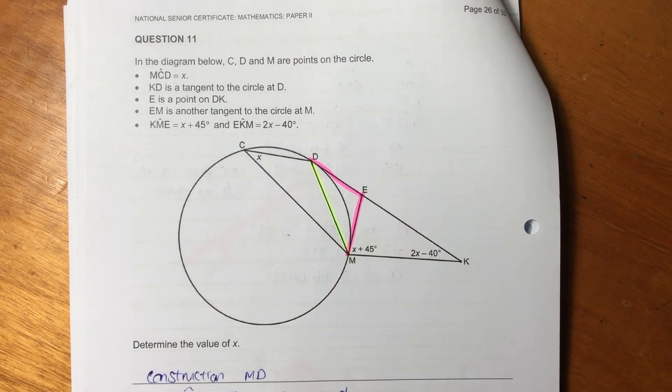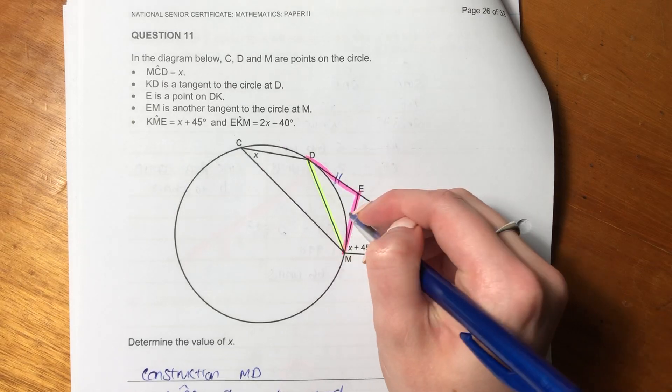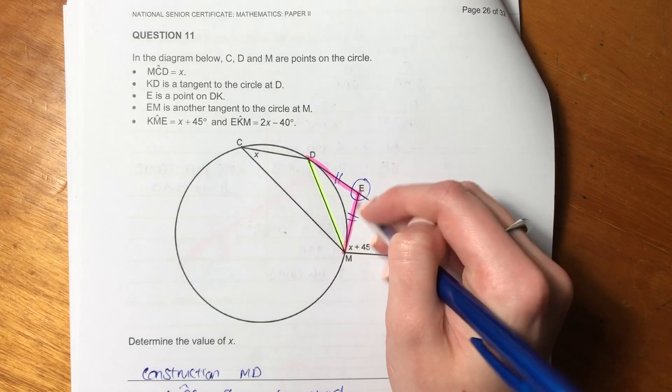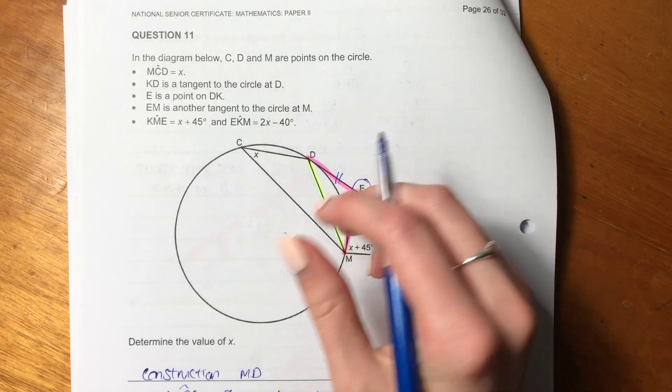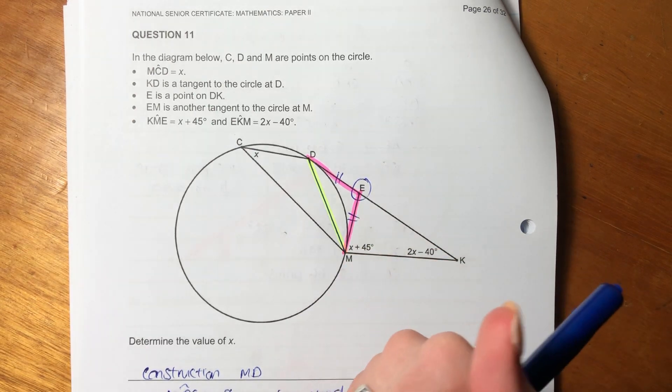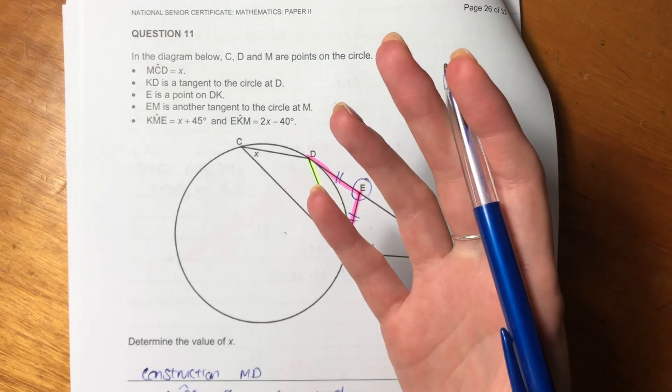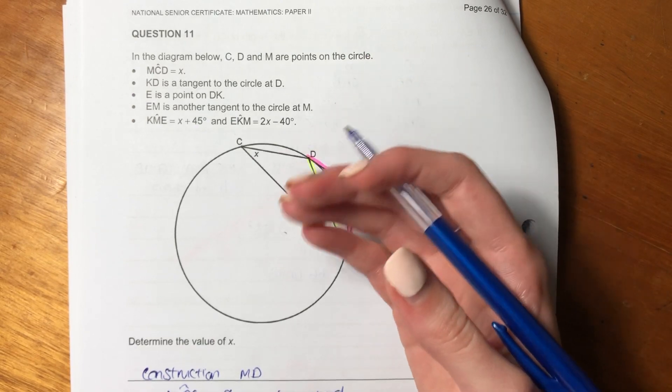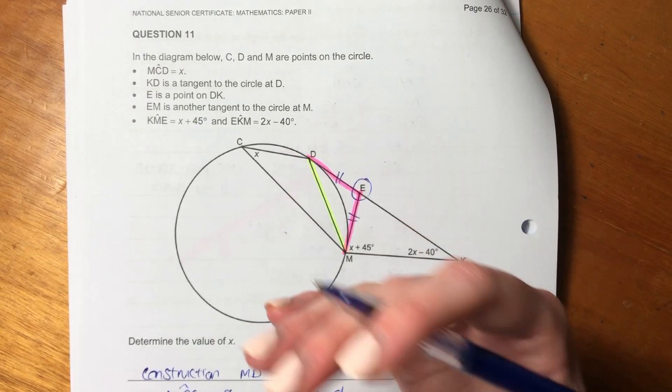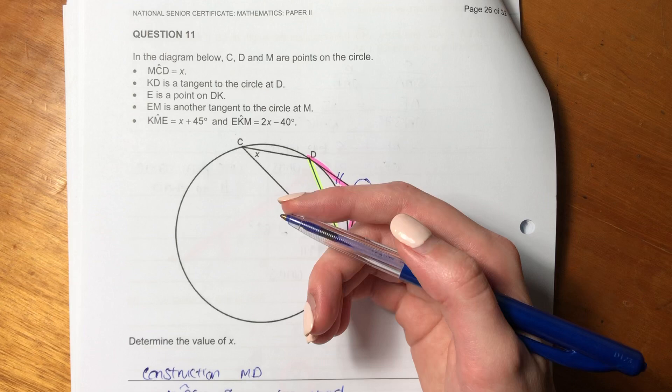So what we should be thinking is because these are tangents from the same point E, they're equal. So you should be thinking isosceles triangle, you should be thinking maybe tan chord, because we have tangents. So you should be thinking about different ways that we can use tangents to prove things.